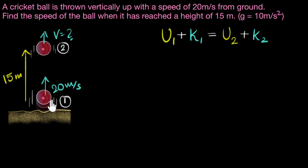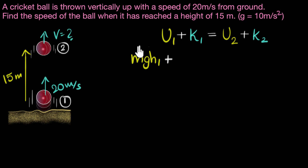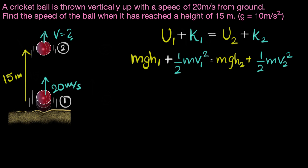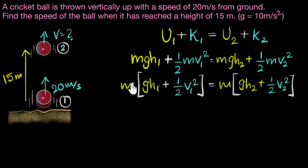Potential energy is MGH since it's gravitational potential energy. So we write: MGH₁ + ½mv₁² = MGH₂ + ½mv₂². Notice that M is common everywhere, so M cancels out, giving us: GH₁ + ½v₁² = GH₂ + ½v₂².